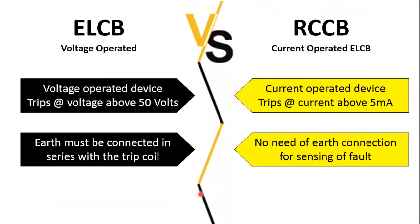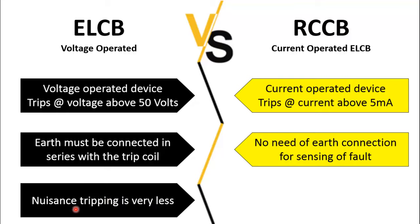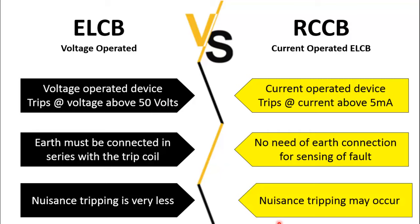For RCCB there is no need of an earth connection because it uses a core balance CT which senses the residual current, and it operates whenever there is a difference between the phase and neutral currents. For ELCB the nuisance tripping is very less because the operating voltage range is above 50 volts, whereas for RCCB nuisance tripping may occur because most old equipment does have some leakage current, so during normal operation of such equipment the RCCB can trip.